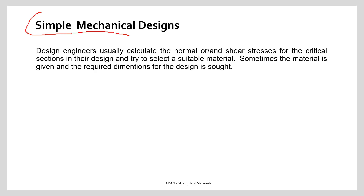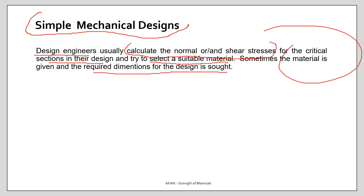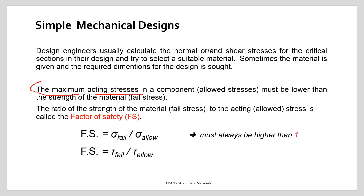Using this information, let's make simple mechanical designs, especially connections. Design engineers calculate normal and shear stresses at critical sections. Sometimes they seek a suitable material; other times the material is given and the dimensions are what's sought. In each case, the maximum acting stress in a component — the allowed stress — must be lower than the strength of the material.